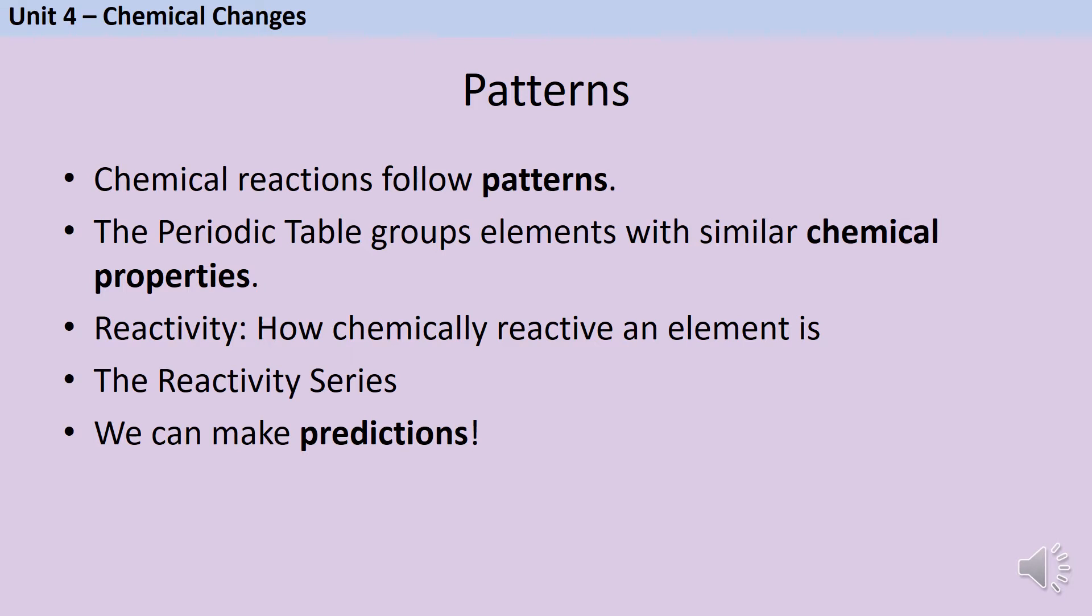When we talk about reactivity, we mean how chemically reactive an element is. How big will the reaction be? The reactivity series is a list of the metals in order of their reactivity. And we can construct a short version of this list ourselves by looking at certain reactions. And then based on this, we can make predictions about other reactions that might or might not happen.